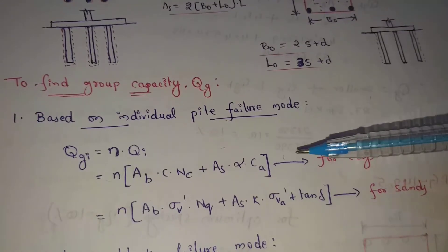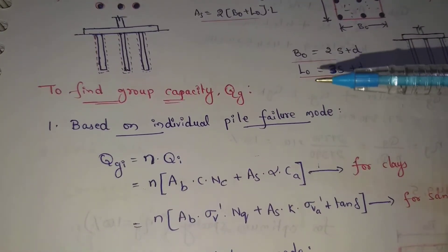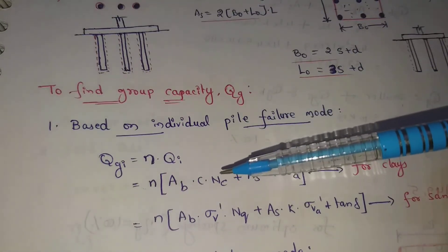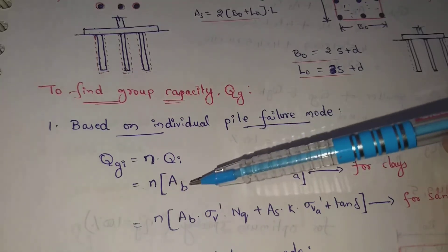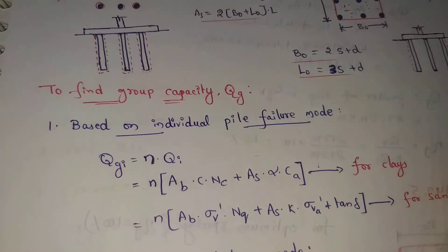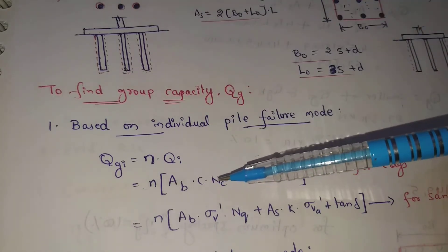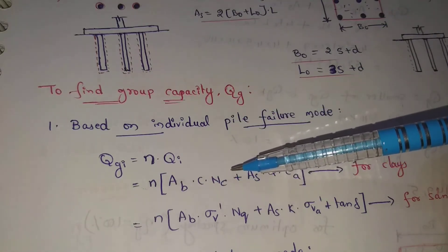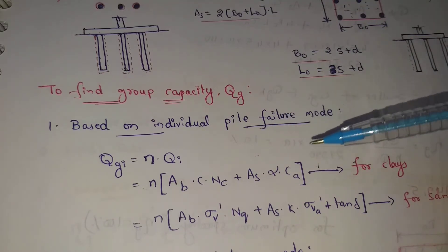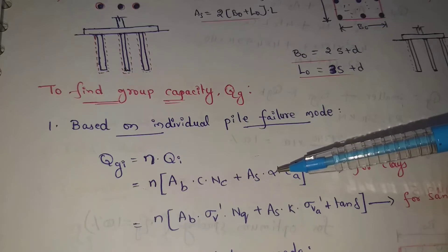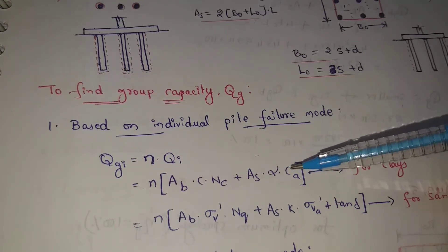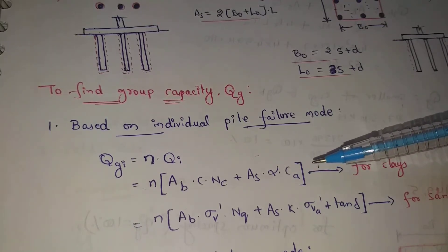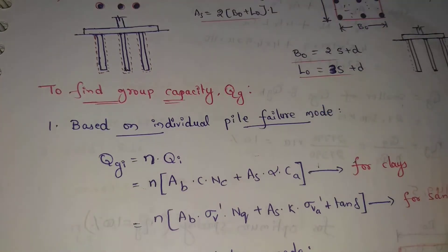For clays, Qi value: Ab means base area of pile. Qi equals Ab into c into Nc, plus alpha into c into surface area of pile, where alpha means adhesion factor, c means average cohesion along the pile length.